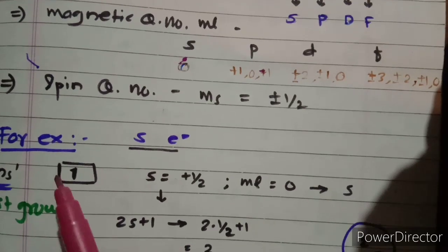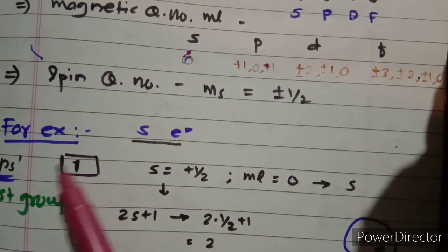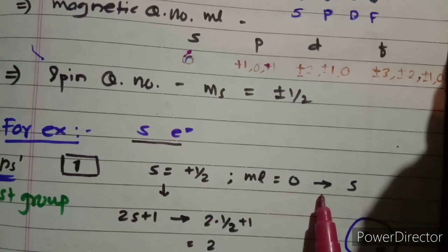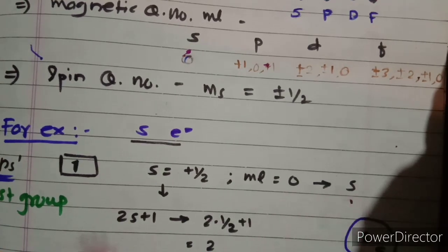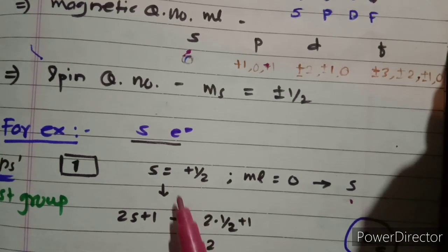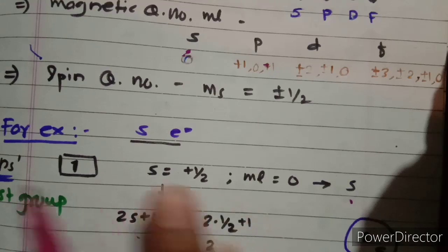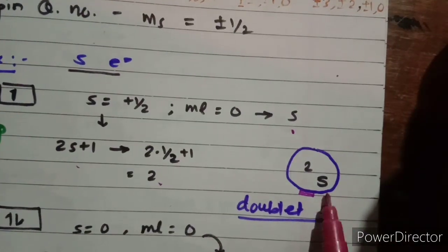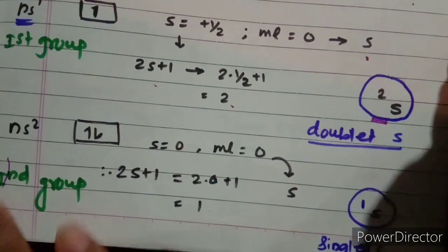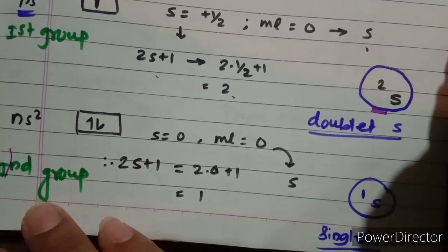Now let's start with the s-electron system. There are two electronic configurations in the s orbital: ns1 or ns2. For ns1, we have a single electron where spin S = ½ and ml = 0, so the term is S. Putting S = ½ into 2S+1 gives 2×½+1 = 2. So the term symbol is ²S, also named 'doublet S.' This is the term symbol for first-group elements.